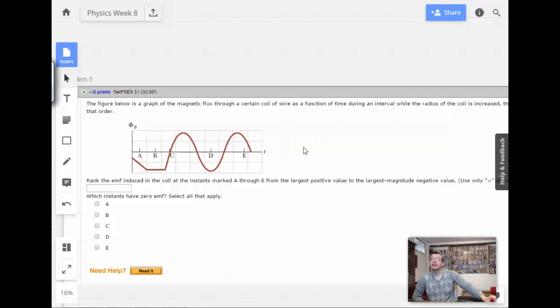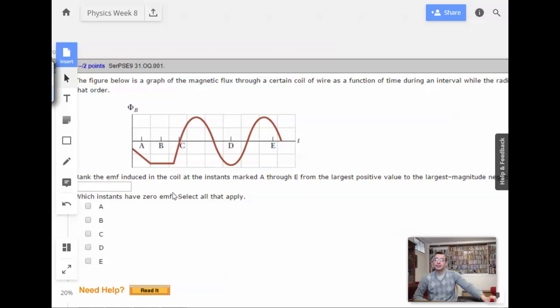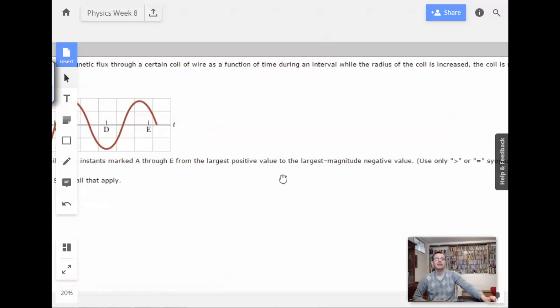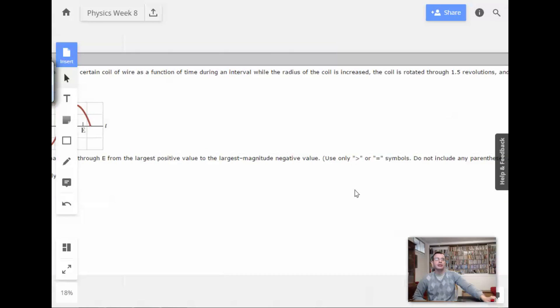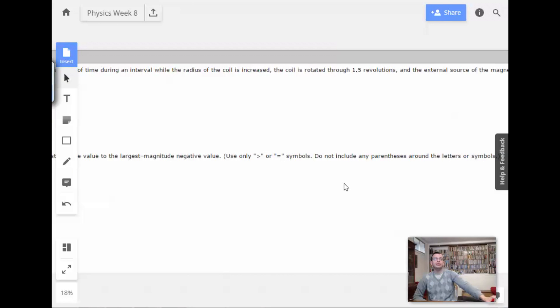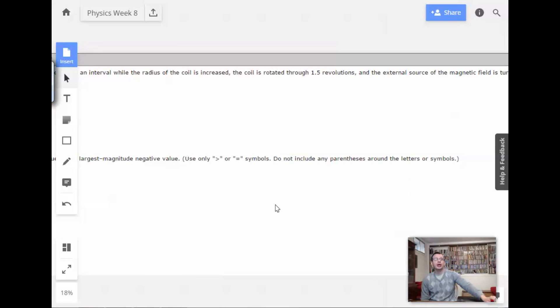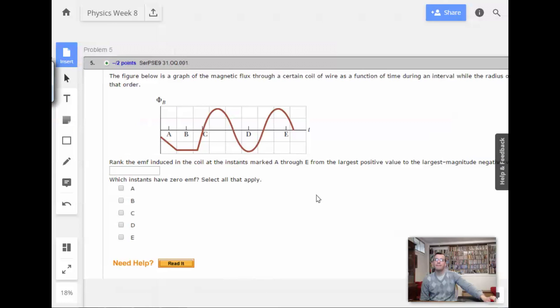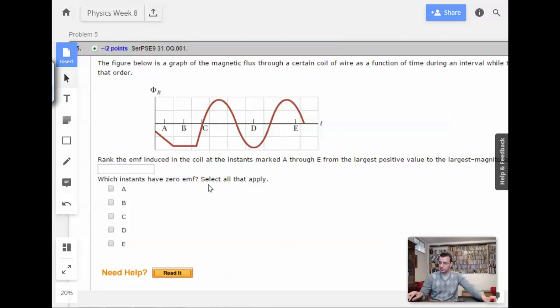Okay, yeah, a whole bunch of stuff happened. Rank the electromagnetic force induced in the coil at the instance marked A through from the largest positive value to the largest negative value. Use only greater than or equal to, no less than. Do not include any parentheses around the letters or symbols. So they gave us all these details. Don't matter.